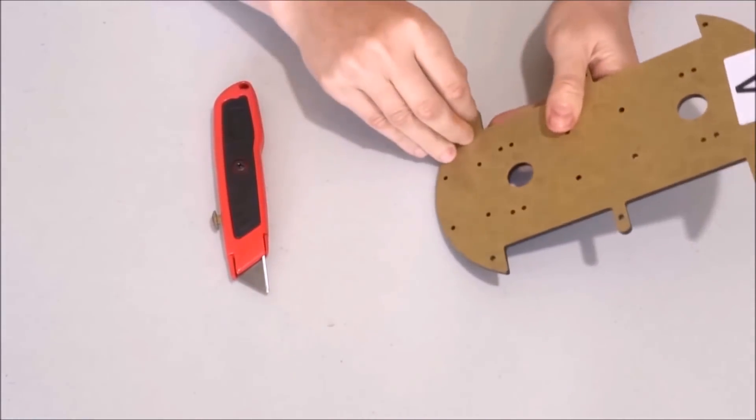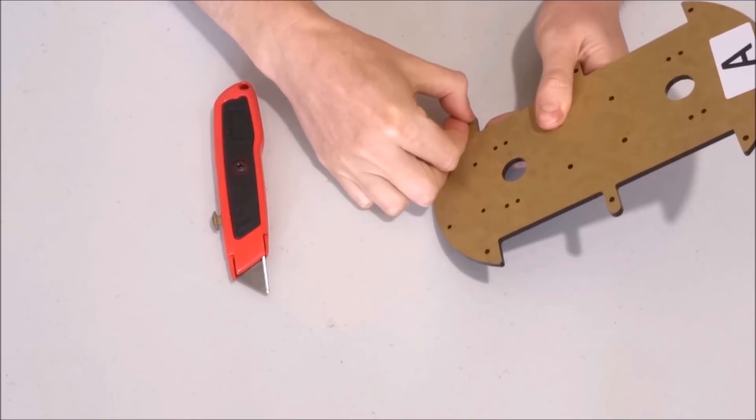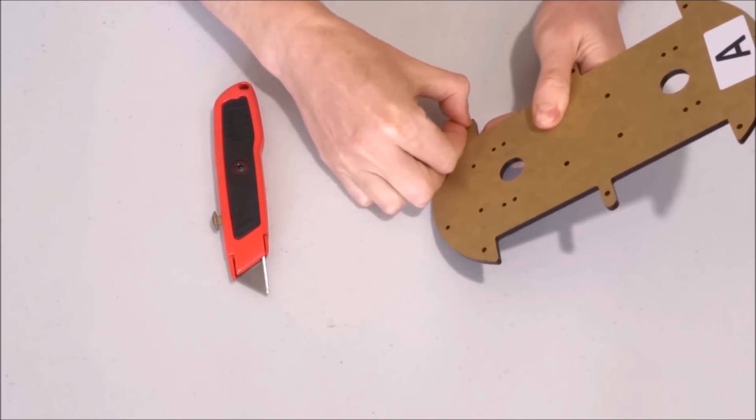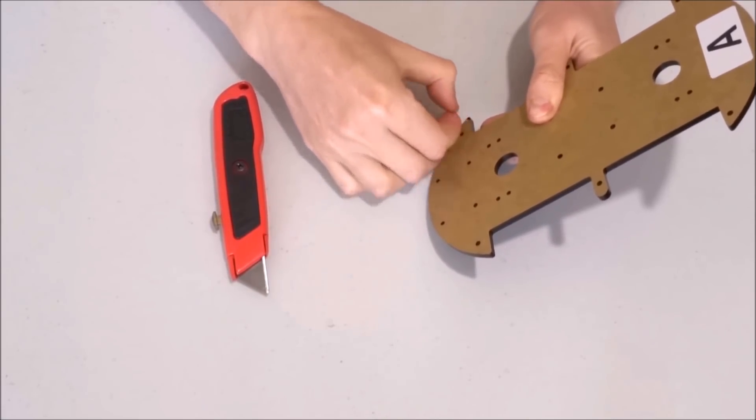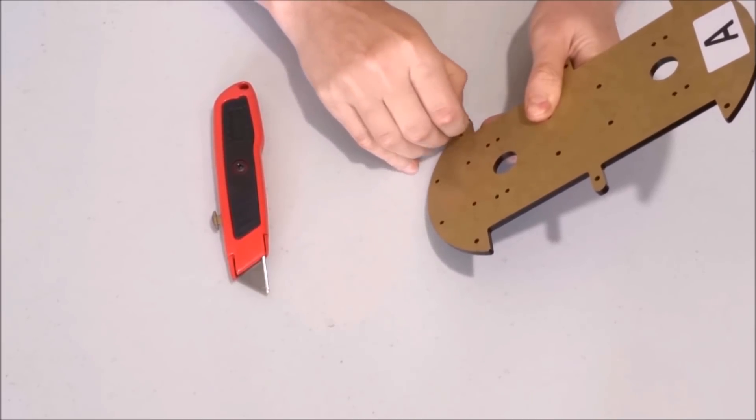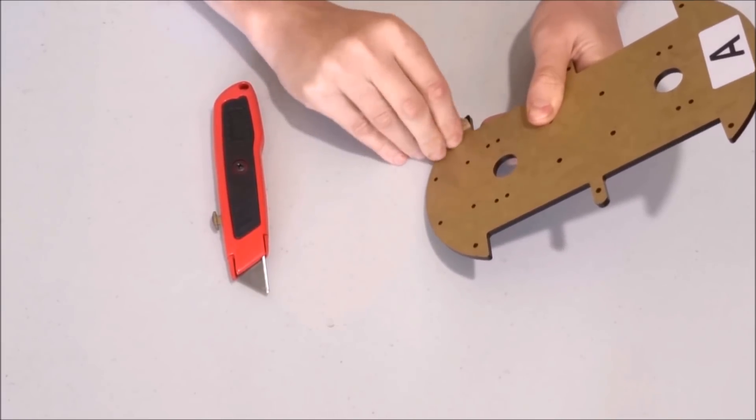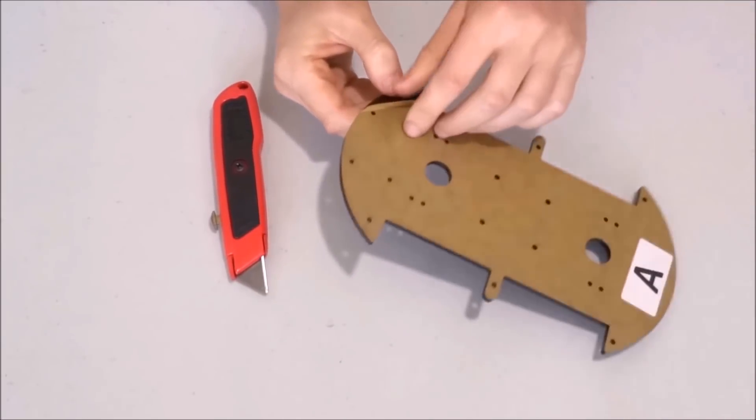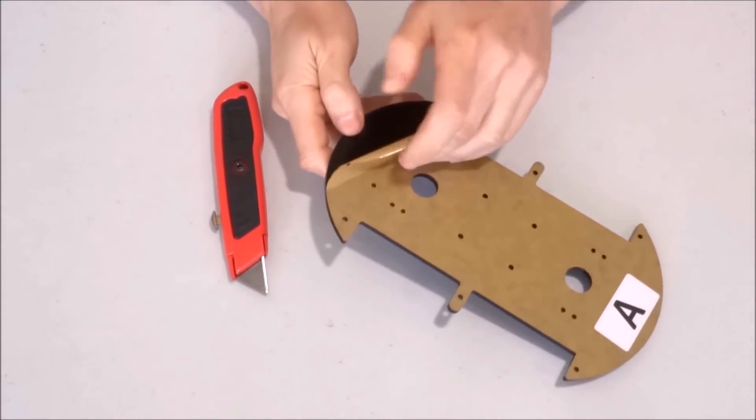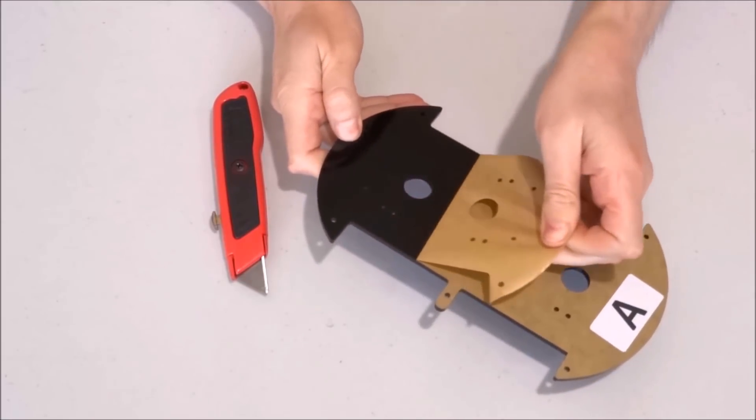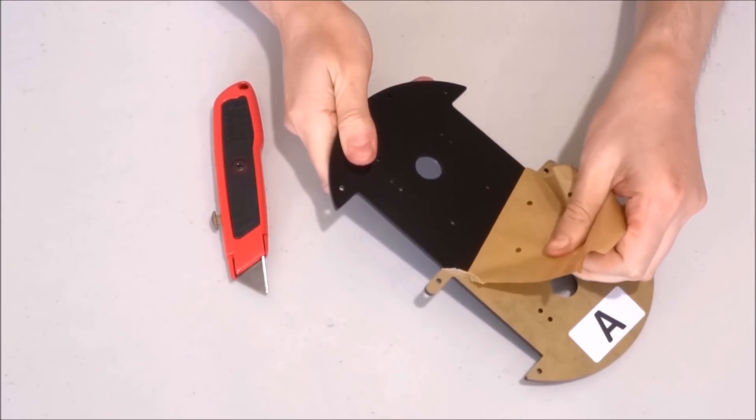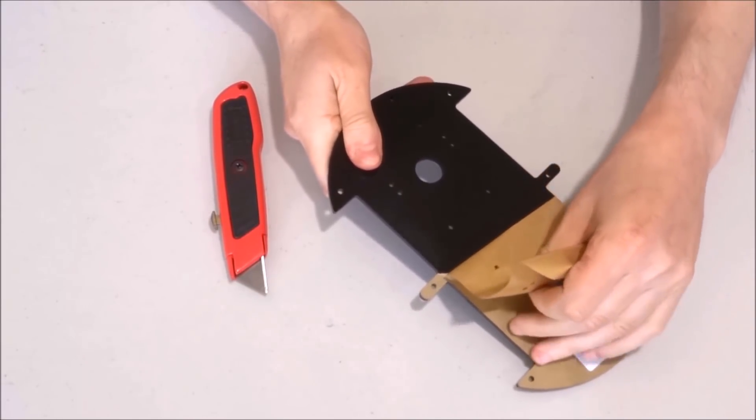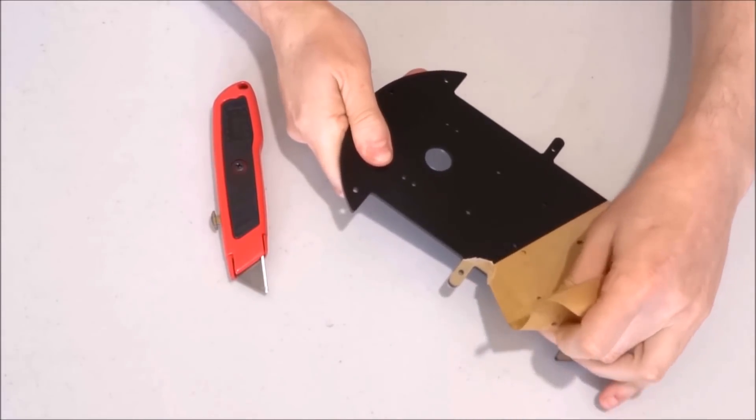Now, we repeat the same procedure on this side. Start peeling from one of the corners. Try to peel once only, if possible. Don't worry too much if one part does not peel. We can handle that later.